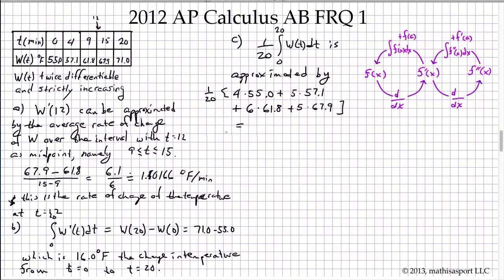We're taking 1 20th of this entire value. And we do have a calculator, so we can handle that computation, and we get 60.79. And let's give it the proper units. That's the average temperature of the water during the interval from 0 to 20.